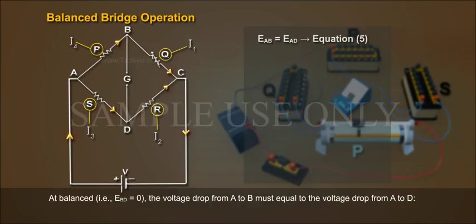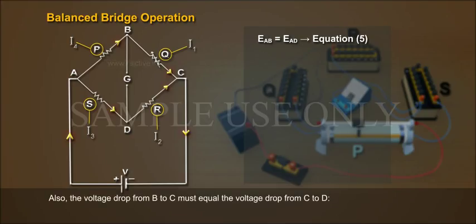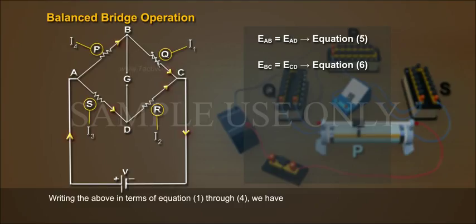EAB equals EAD, Equation 5. Also, the voltage drop from B to C must equal the voltage drop from C to D: EBC equals ECD, Equation 6. Writing the above in terms of equations 1 through 4, we have: